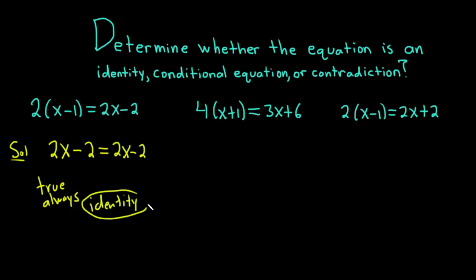Now you could keep going here if you wanted to. You could add 2 to both sides, and you would just get 2x equals 2x. Then you could divide by 2 and you would just get x equals x. And you would still get the same thing, you would get identity.